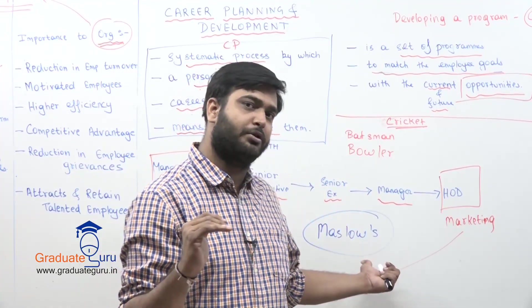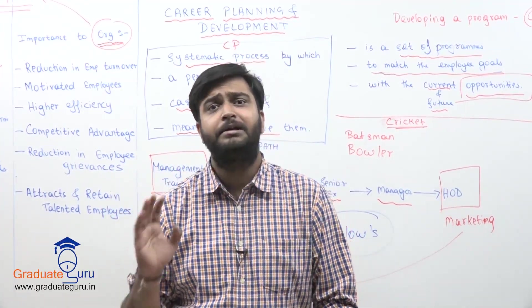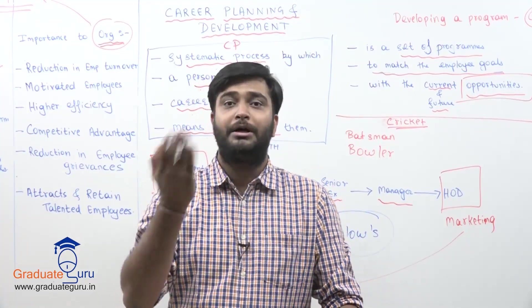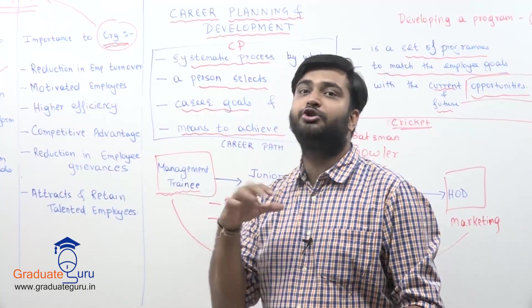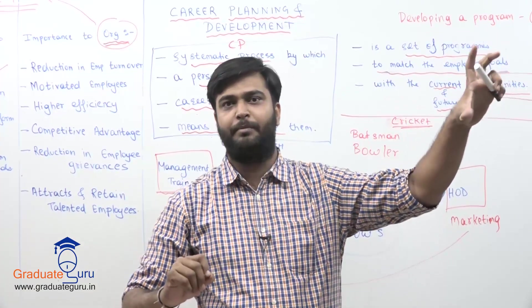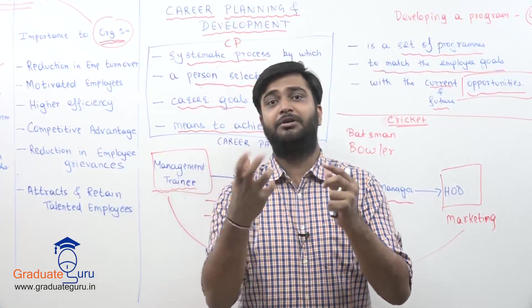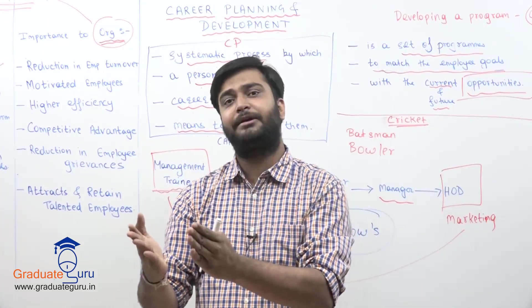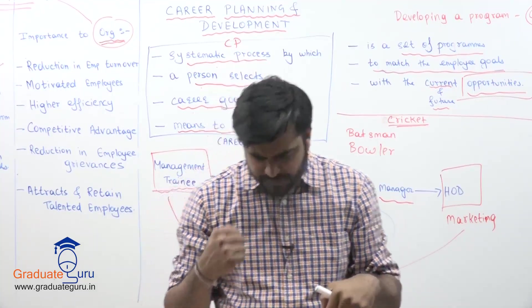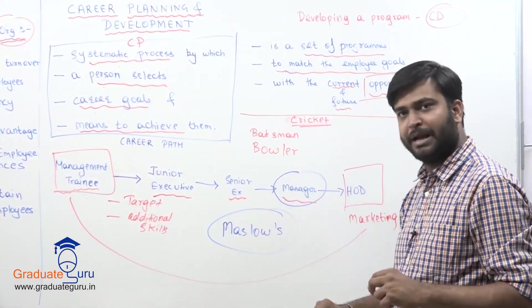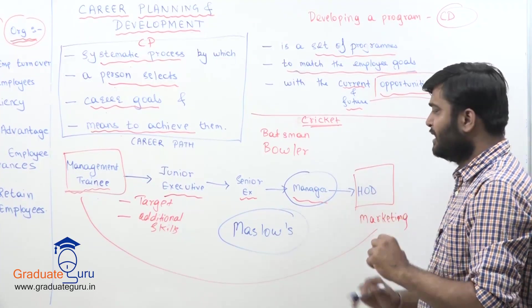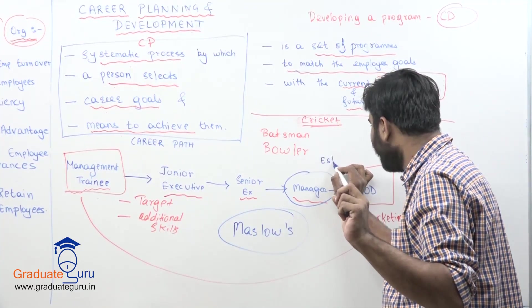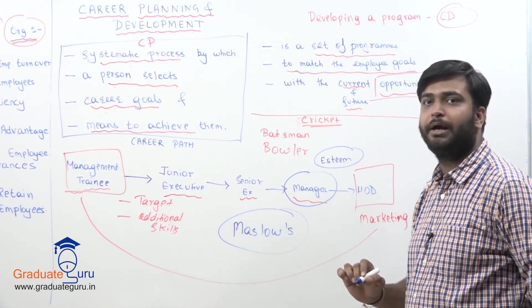After basic needs, second is safety and security needs - investing in insurance, mutual funds to secure your future. Third is social needs - socializing, taking club membership, going to gym, making friends, because humans are social animals. After all these are taken care of - suppose I've reached manager level - now the most important need is esteem needs. To satisfy your ego.